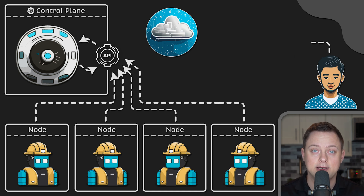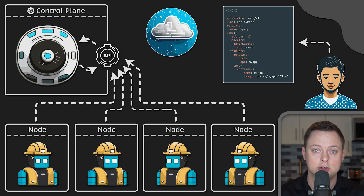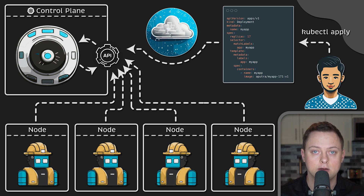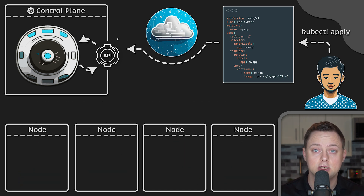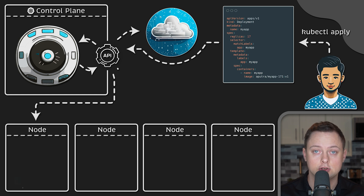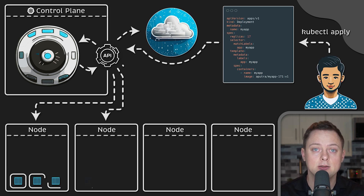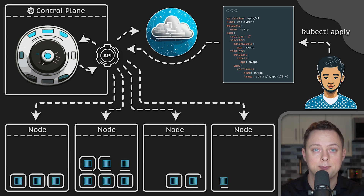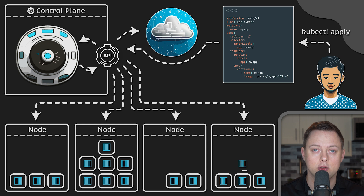When we create a deployment object to deploy an application to Kubernetes, we may use kubectl and apply the YAML file. kubectl will upload this object to the control plane, and the control plane will select an appropriate worker node and start running your application.